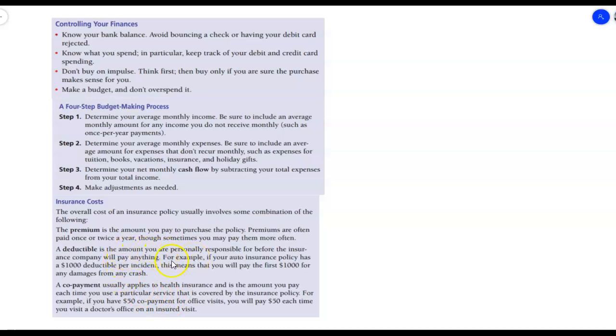The deductible is the amount that you are personally responsible for before the insurance company will pay anything. For example, if your auto insurance has a $1,000 deductible per incident, this means that you will pay the first $1,000 for any damage from any crash. And they love that because in a whole lot of crashes, like small crashes that are $1,000 or less, they don't end up having to pay a thing.